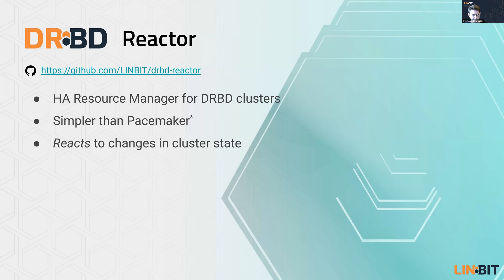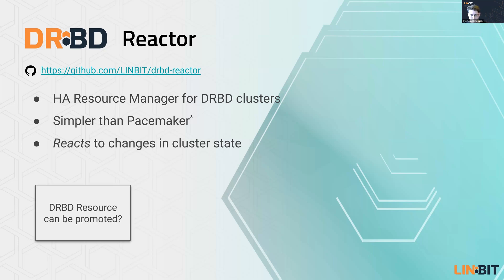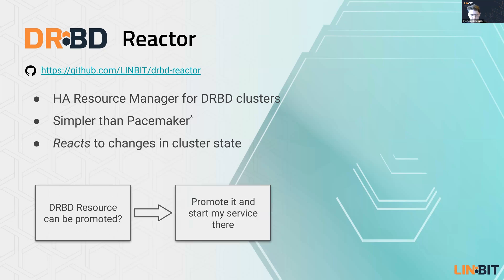Just a few words on how DRBD Reactor technically works. It reacts to changes in cluster state, as the name implies. Every time something changes within DRBD, we can react and execute some action. The question we're asking at all times is: is there a DRBD resource that can be promoted? If so, promote it — make it writable and start some service there. That service may be a systemd unit, or it may be a resource agent — the ready-made piece of software that comes with Pacemaker — that starts iSCSI targets and similar services.